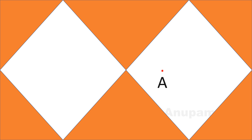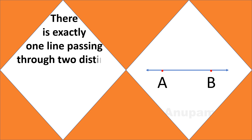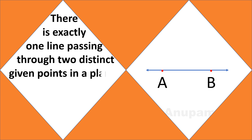Now consider two points A and B. We can draw just one line passing through both of them. That means there is exactly one line passing through two distinct given points in a plane.